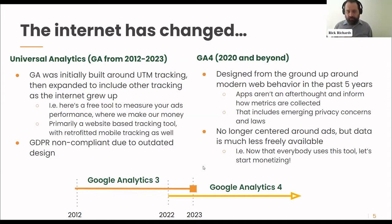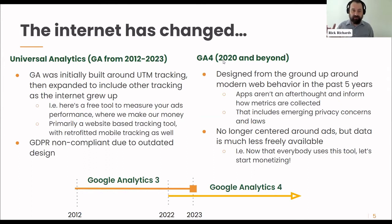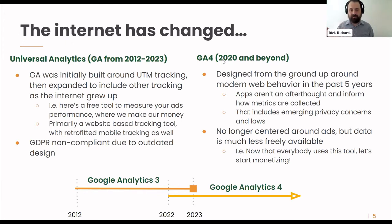So GA4, which really started being released for use in 2020 but is still undergoing changes and very much in flux, has been designed from the ground up around modern web behavior, particularly in the past five years. Apps are no longer an afterthought — they inform how metrics are collected. Think about how people used to use computers: they'd sit at their desktop, pull up some pages, look at one site. That was what Universal Analytics measured. GA4 is really concerned with people from all different devices who might be looking for five seconds, or just clicking a button and downloading something.